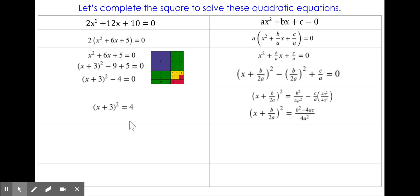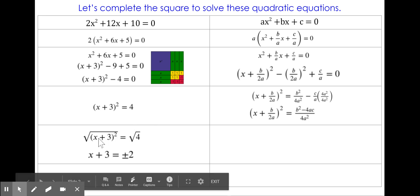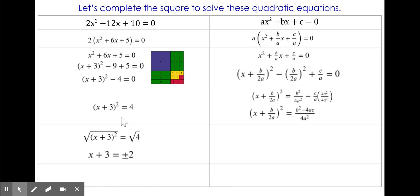Now we're going to solve. We're going to take the square root of both sides, and the square root of the quantity x plus 3 squared is x plus 3, and the square root of 4 is 2, but we know that it's really plus or minus 2, because negative 2 times negative 2 is also 4.